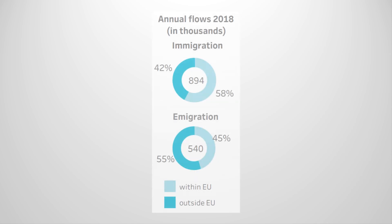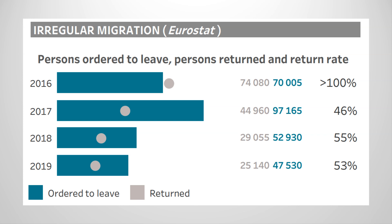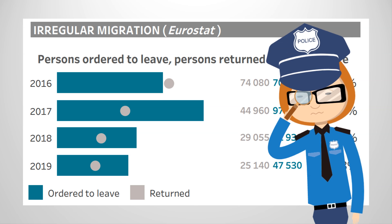Now let's look at migrant flows. These circles can be interpreted just like pie charts — each portion of the circle represents a percentage of a total group, in this case annual immigrant and emigrant flows measured in thousands. We can see here that in 2018, of the 894,000 people who immigrated to Germany, 58% were from an EU country while 42% were from outside of the EU. Data on irregular migration is also present, but let's remember that this data concerns specifically detected irregular migrants.